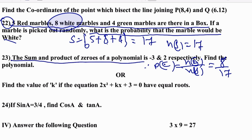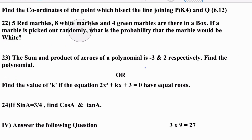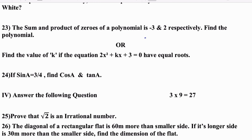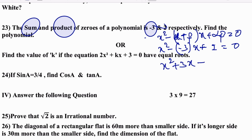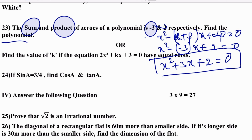The sum and product of the zeros of a polynomial are −3 and 2 respectively. Find the polynomial. Using the formula: x² − (sum)x + (product) = 0, we get x² − (−3)x + 2 = 0, so P(x) = x² + 3x + 2 is the answer.